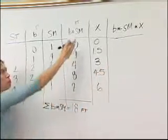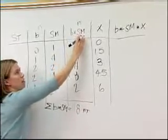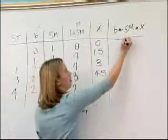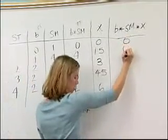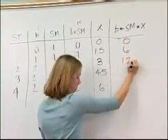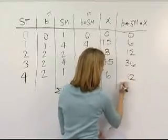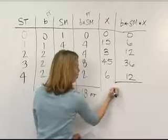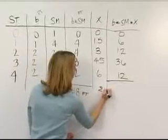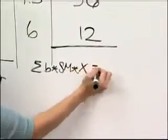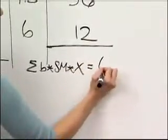Now we just multiply the beam times the Simpson's multiplier times X, the lever arm. And then total it, which will give us a value of 66.